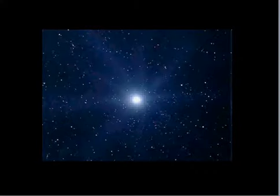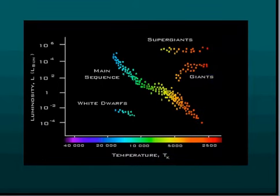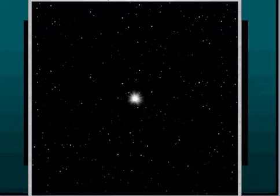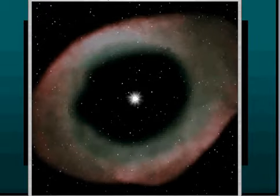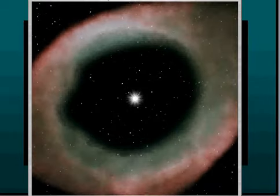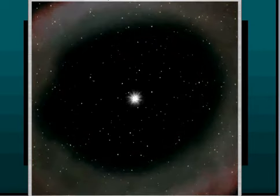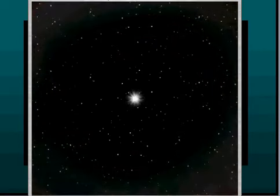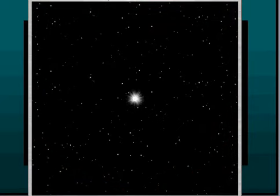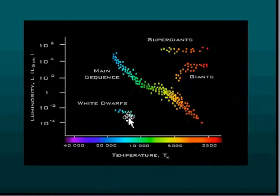White dwarfs, it was known, were end states of stars - stars which had exhausted their fuel, thrown out their outer layers and atmosphere as a planetary nebula, and remained as dense internal parts which were hot, white-hot, and low in luminosity.